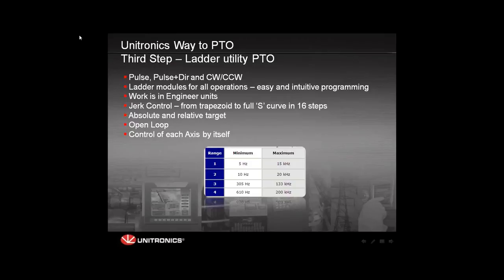One more feature the new PTO can do is control the jerk factor. The jerk factor is the intensity of the acceleration curve — it can be very smooth or very jerky, and it can be set in 16 steps, ranging from a full trapezoid to a totally smooth S-curve.